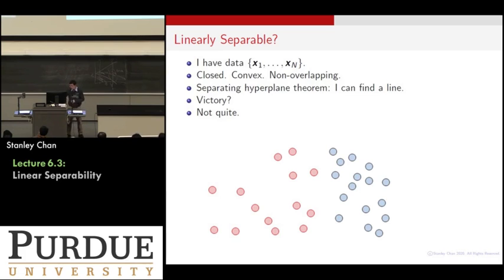What is more important is about this generalization issue. I have a data set that contains points x1 through xn. They are closed, they are convex, they are not overlapping, then somehow I can show that the separating hyperplane theorem applies. I know that closed convex and no overlapping, then I can show the existence of separating hyperplane. And then that means I can find a line. Am I done? Not yet. That is the issue about generalization and training.